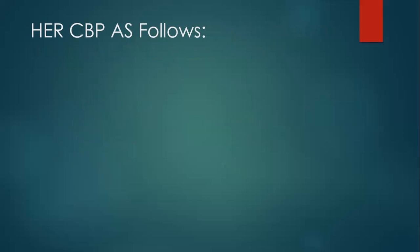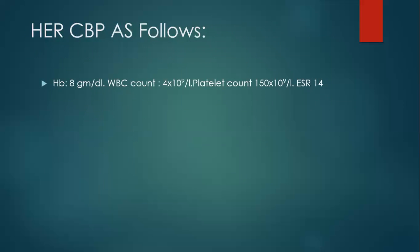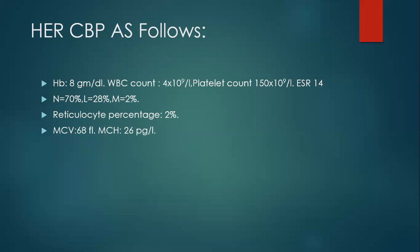Now we come to the investigation data. The complete blood picture showed a hemoglobin of 8, white blood cell count of 4,000, platelet count of 150,000, and ESR of 14. The differential of the white blood cells is normal. The reticulocyte percentage is 2%. The mean cell volume is 68, which is below normal, meaning this is a hypochromic microcytic anemia. The ESR is 37.